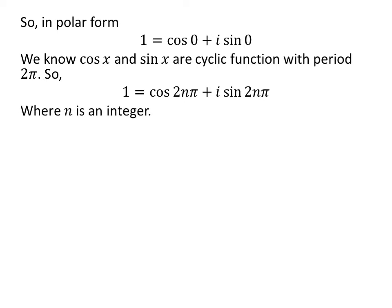We know cosine and sine functions are cyclic functions with period 2 times pi, so 1 is equal to cosine of 2 times n times pi plus i times sine of 2 times n times pi, where n is an integer.